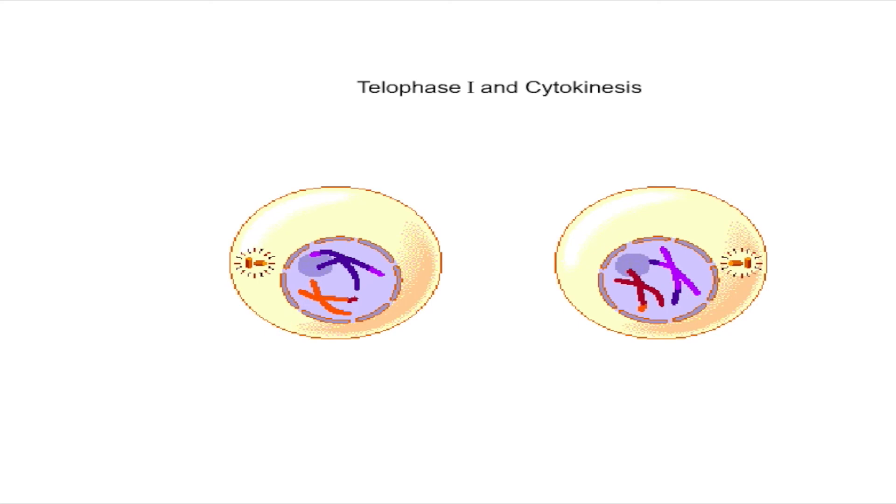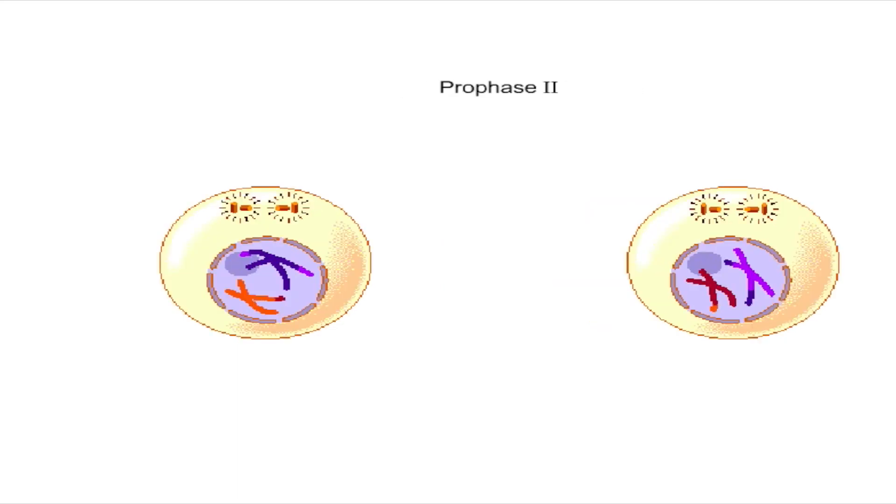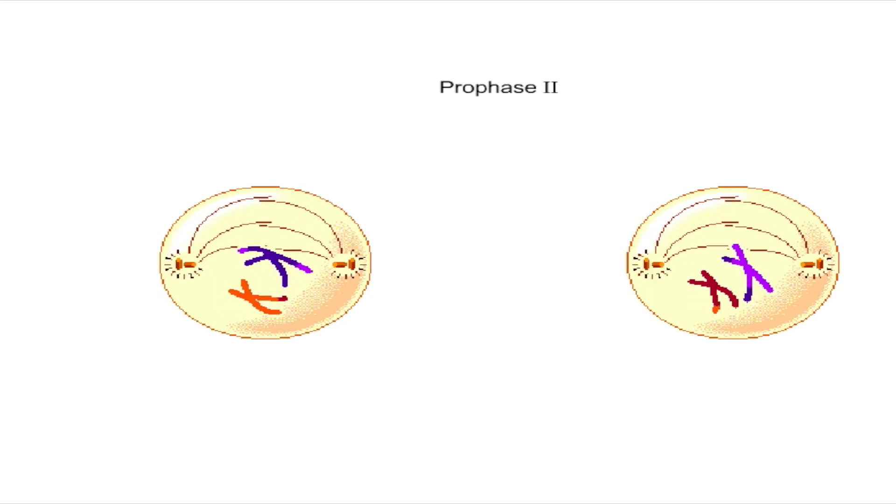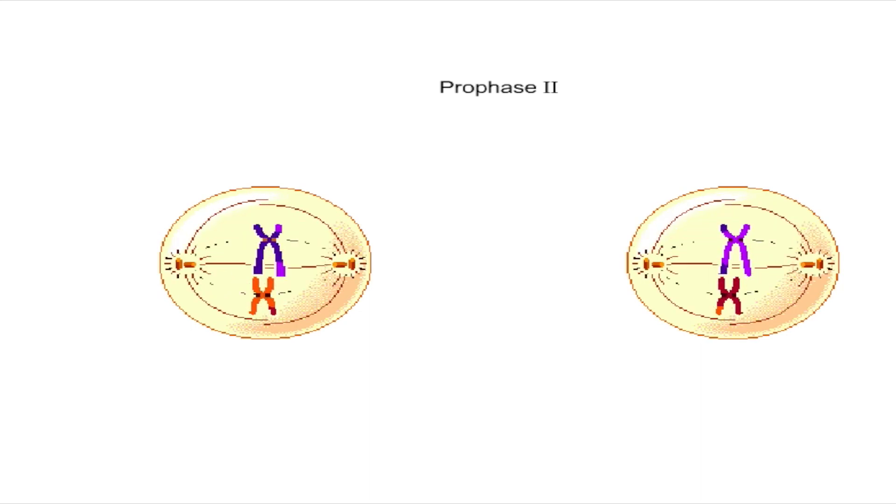The result is two cells, each with a haploid set of chromosomes, each consisting of two chromatids. Meiosis two is very similar to mitosis. Prior to the start of prophase two, each centriole divides into two.